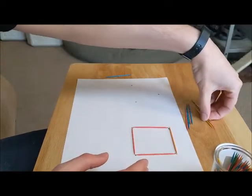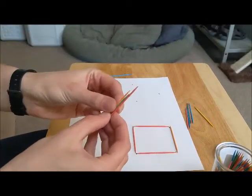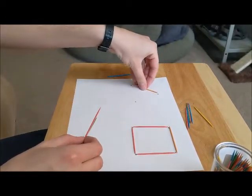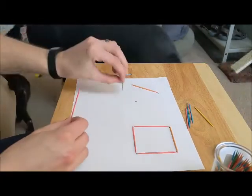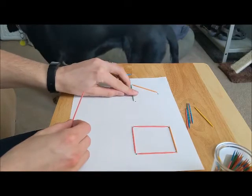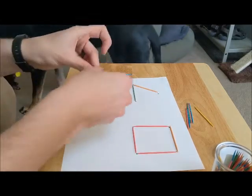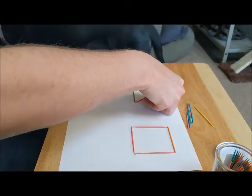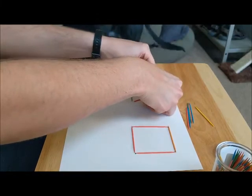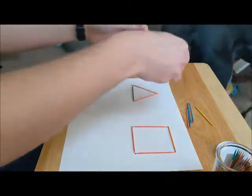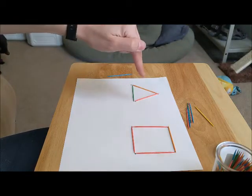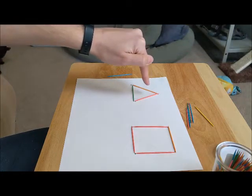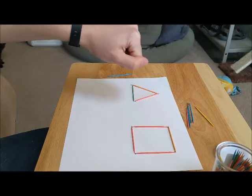And then we're gonna do the same thing with our other one. So we got our toothpicks here so we're gonna line them up with the dots. Like that. There. So we have our next shape. Do any of my friends at home know what that shape is? That's right it's a triangle.